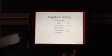Pronumerals are the letters. An expression is at least two terms with a sign in it, and a constant is a number.